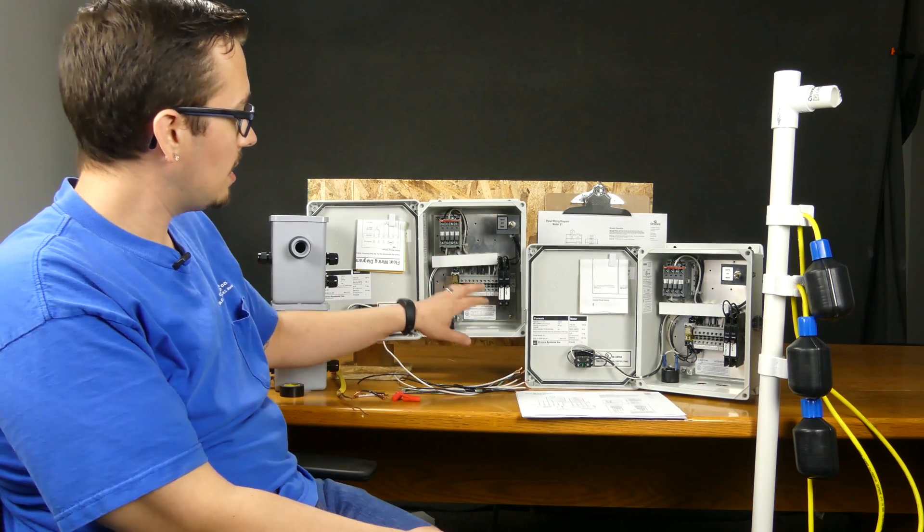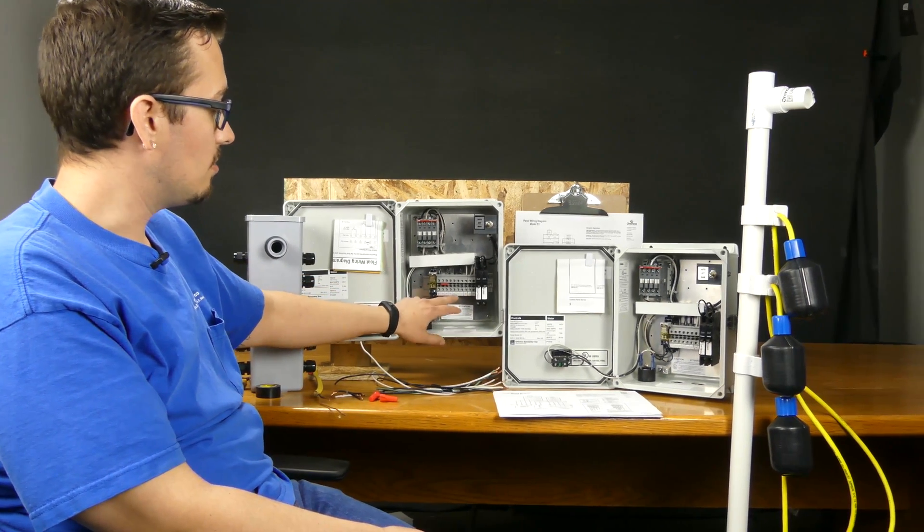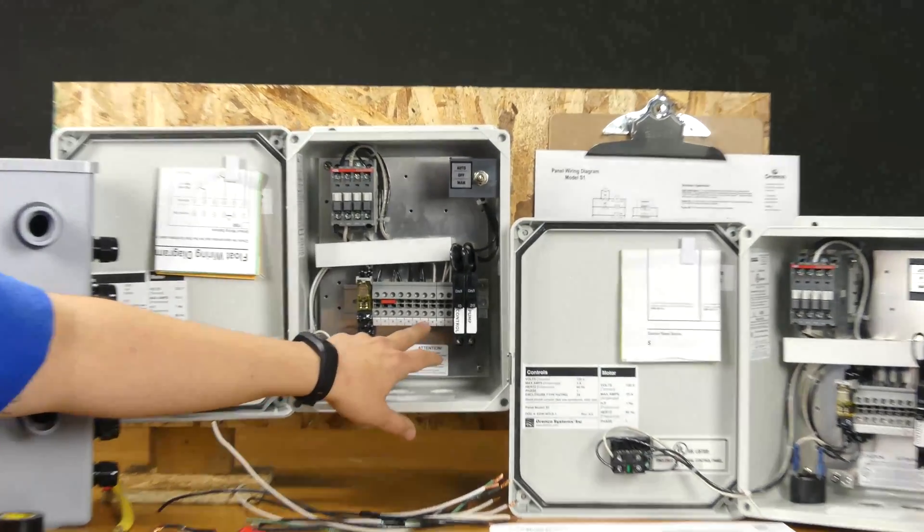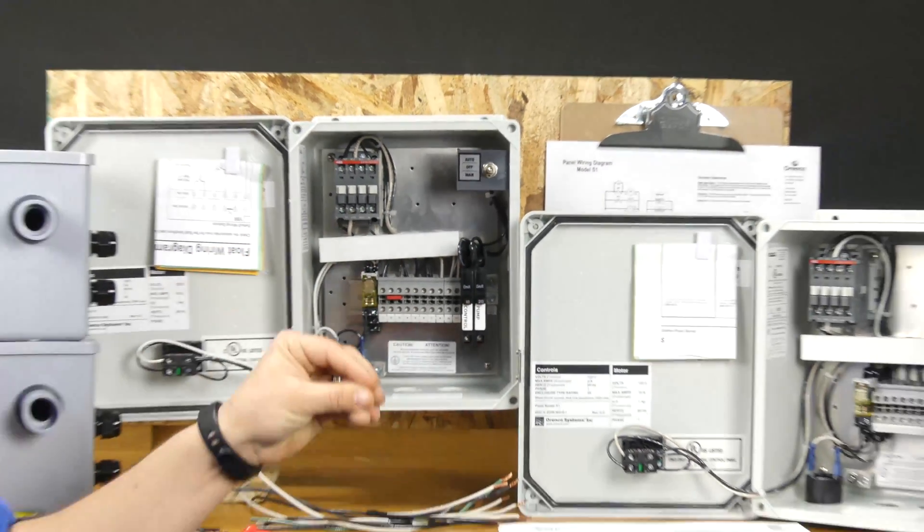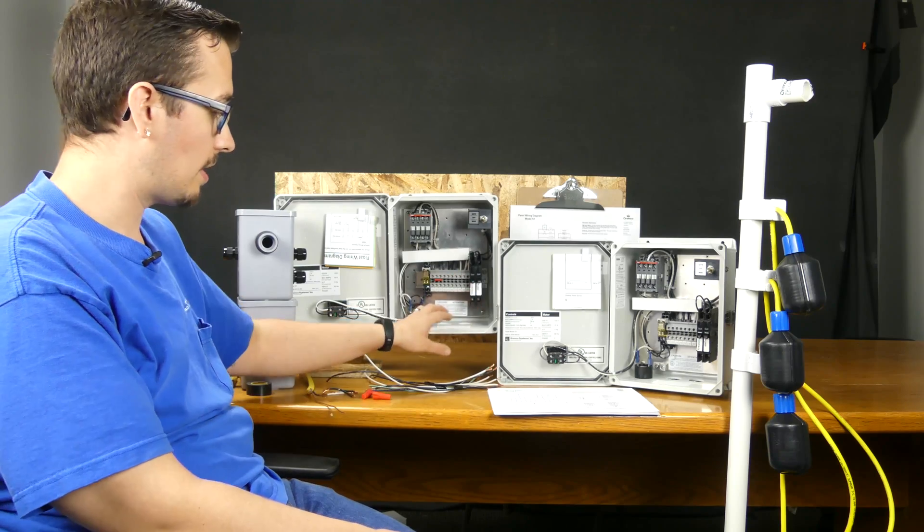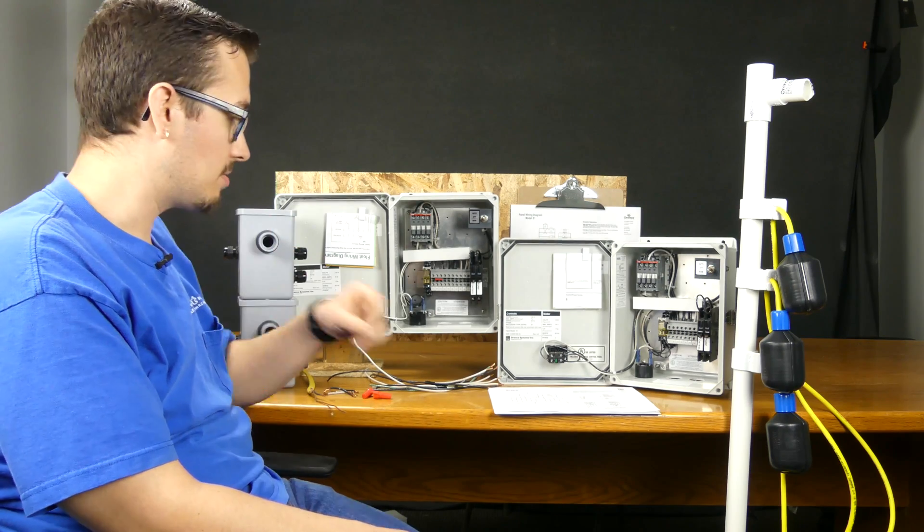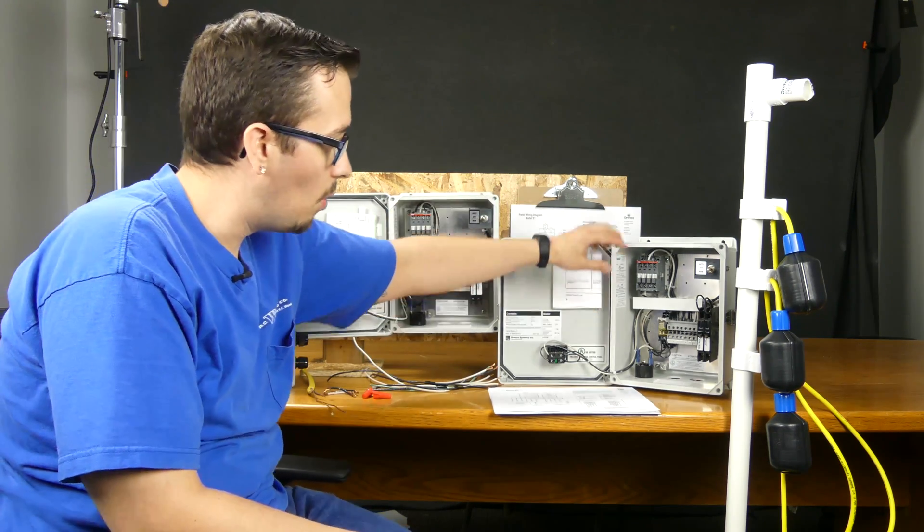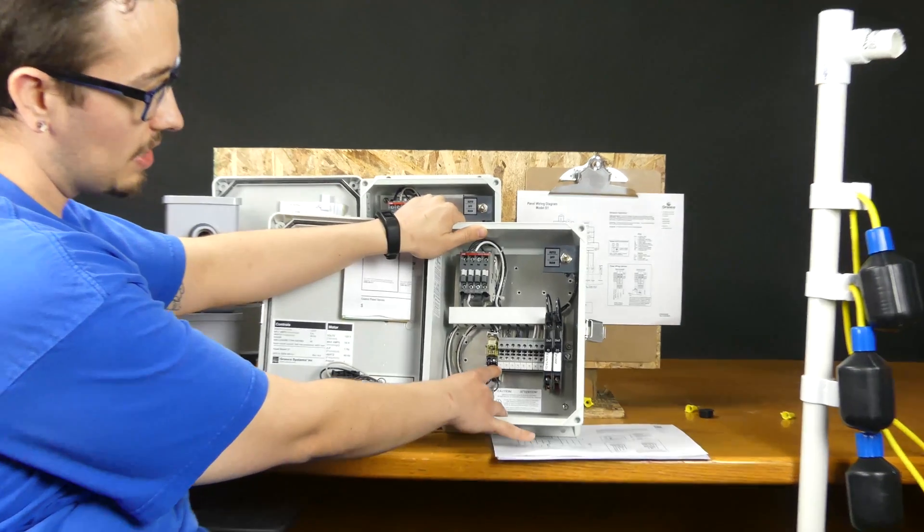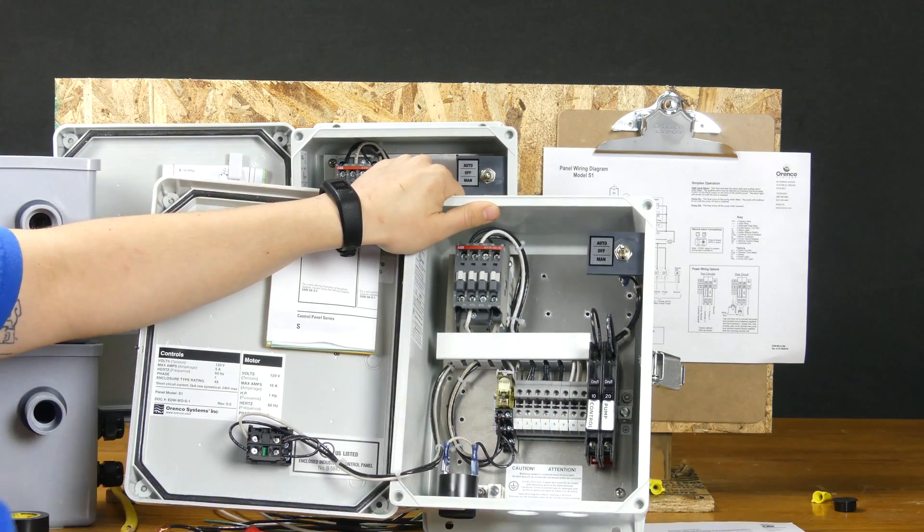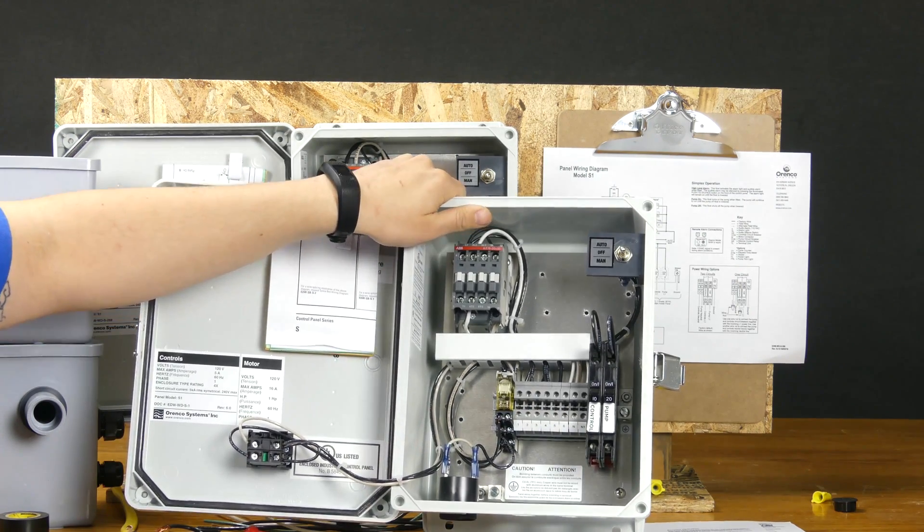Briefly to summarize, the biggest difference is now in the new panel you're landing all six of your float wires, as opposed to before you had to create a common in the splice box, or with the way that we did it, we would create a common inside of the panel down here. With the old panel, you've only got five spots for your floats, and that's where that common came into play to pair that number of floats down.